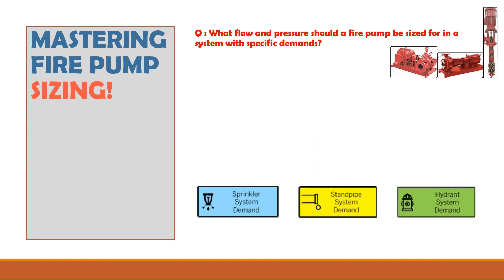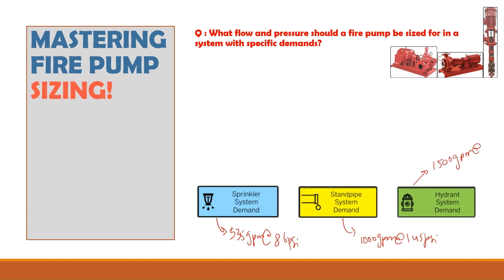Based on hydraulic calculations, the sprinkler system demand is 535 gpm at 86 psi, the standpipe system demand is 1000 gpm at 145 psi, and the hydrant network demand is 1500 gpm at 20 psi at the most remote hydrant.